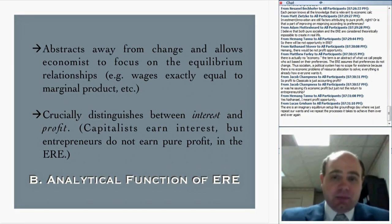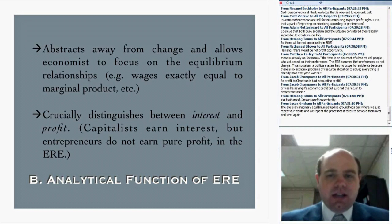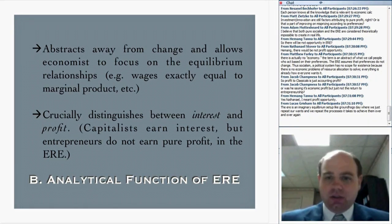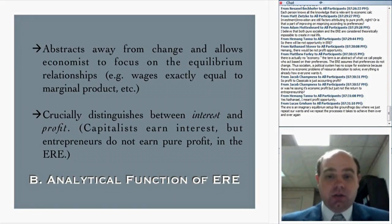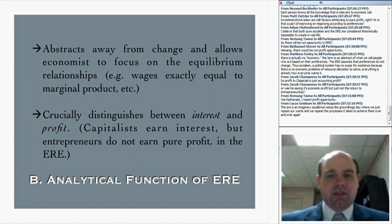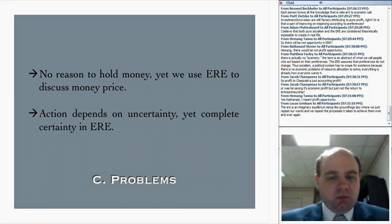This is the kind of stuff we're going to look at very carefully over the coming weeks. When all is said and done you'll have a very crisp understanding of these principles. In the ERE we can easily separate those things because there is no change and no uncertainty, so there can be no pure profit — you can't have one entrepreneur with better foresight than somebody else. But capitalists can still earn interest income. By week three, you'll totally have that under your belt — how capitalists can earn interest income in the evenly rotating economy — because Rothbard has great diagrams with numerical examples.